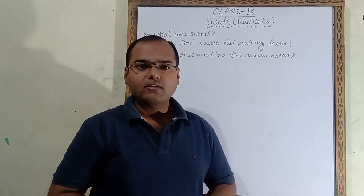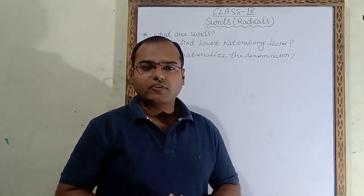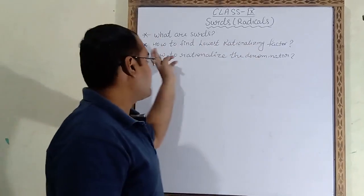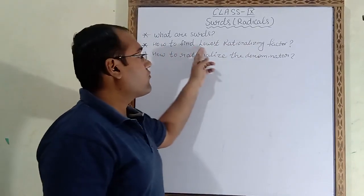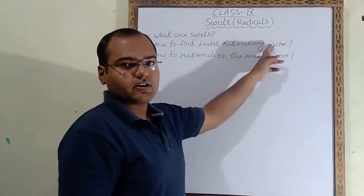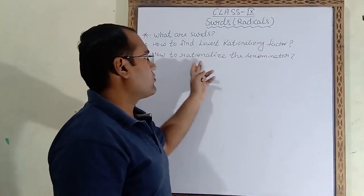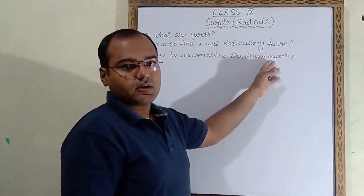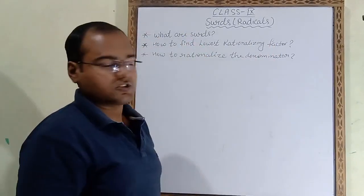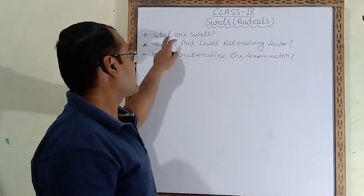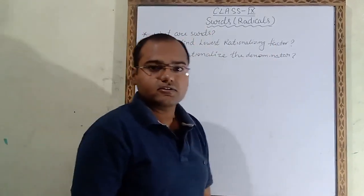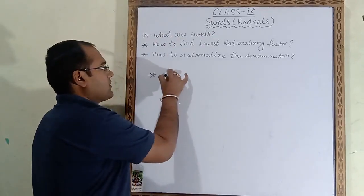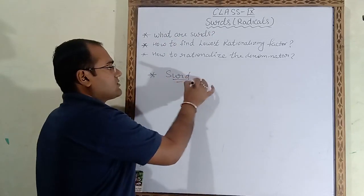Hello everyone. Today in this video you will learn three things: what are surds, how to find the lowest rationalizing factor, and how to rationalize the denominator. Now we will begin with the first point. The first topic is surds.